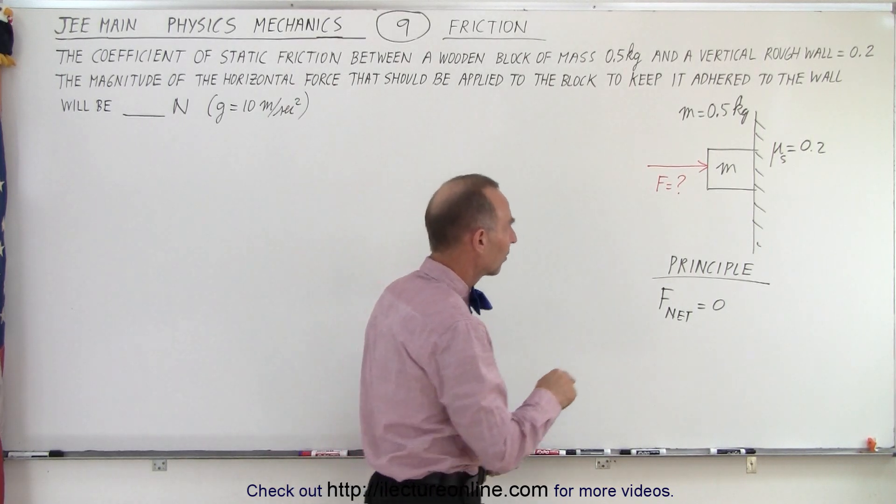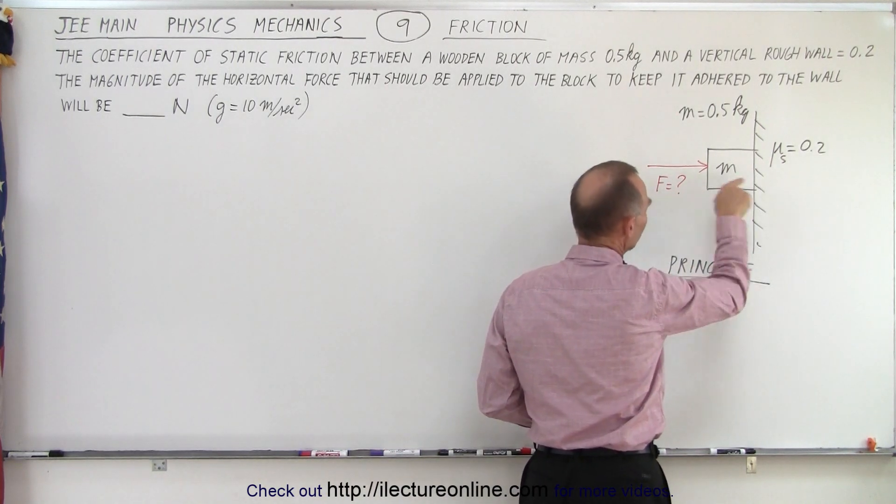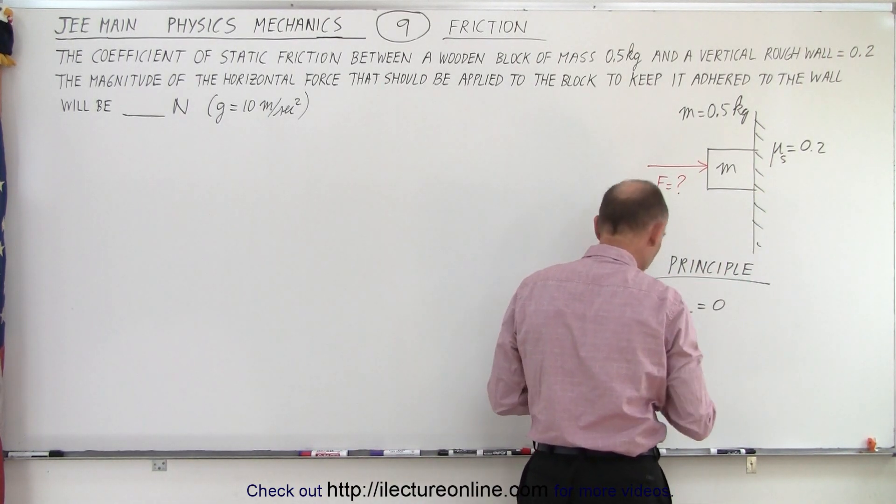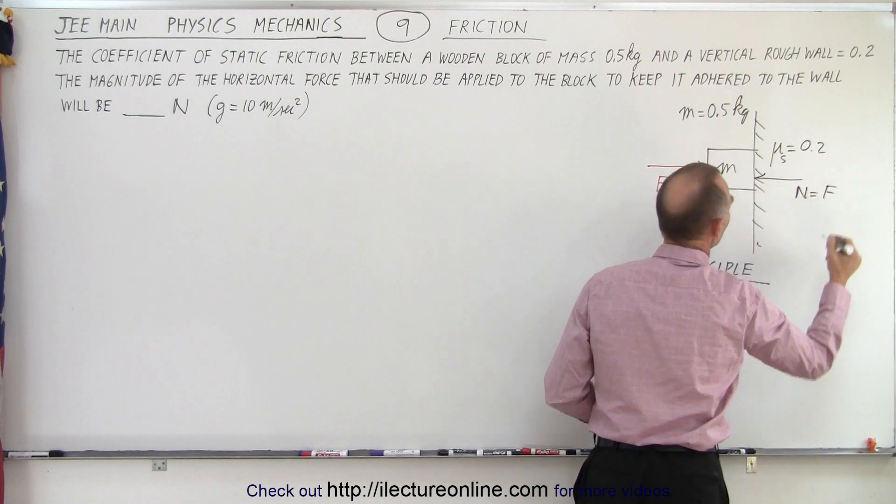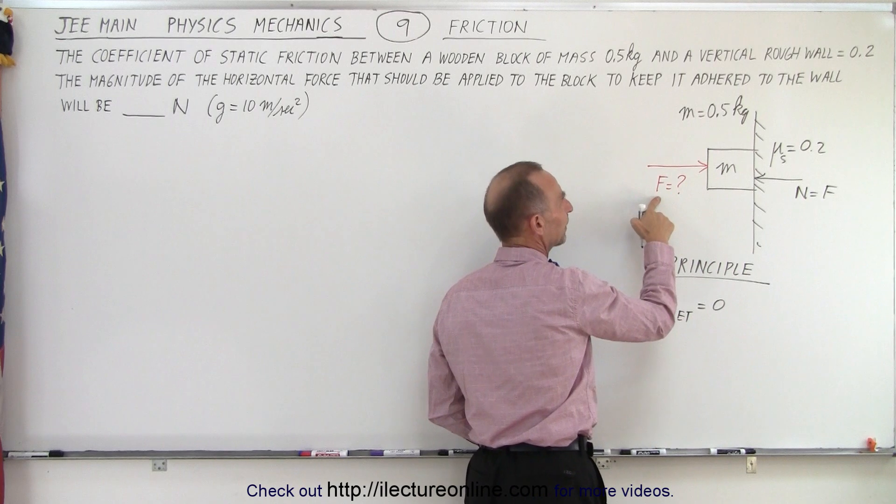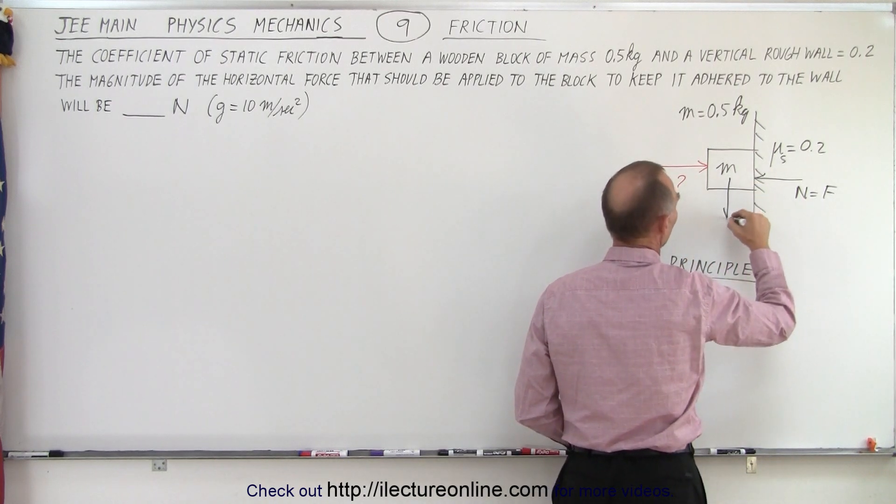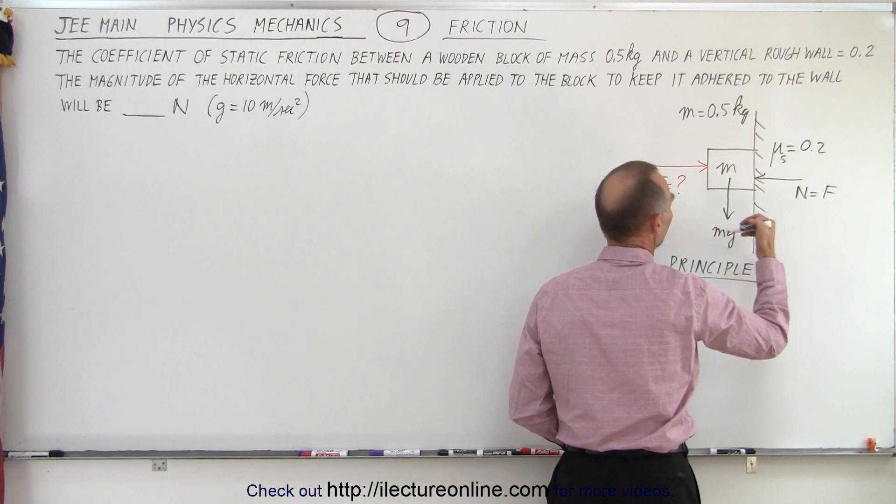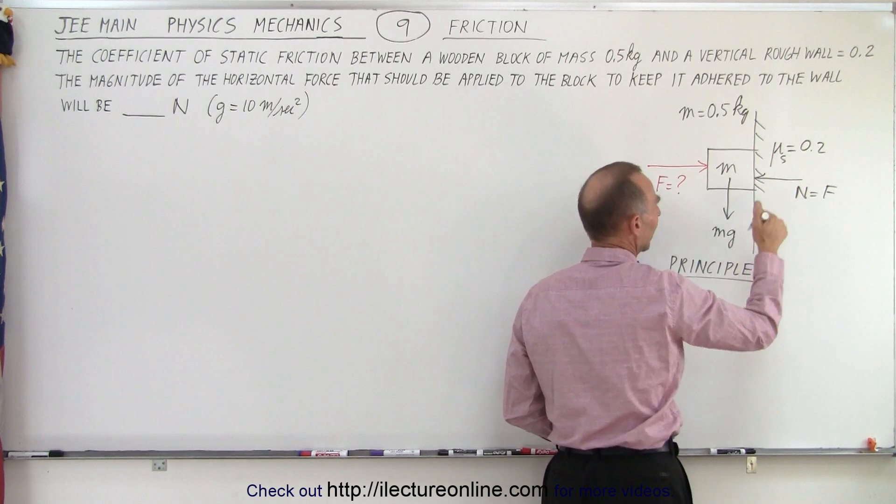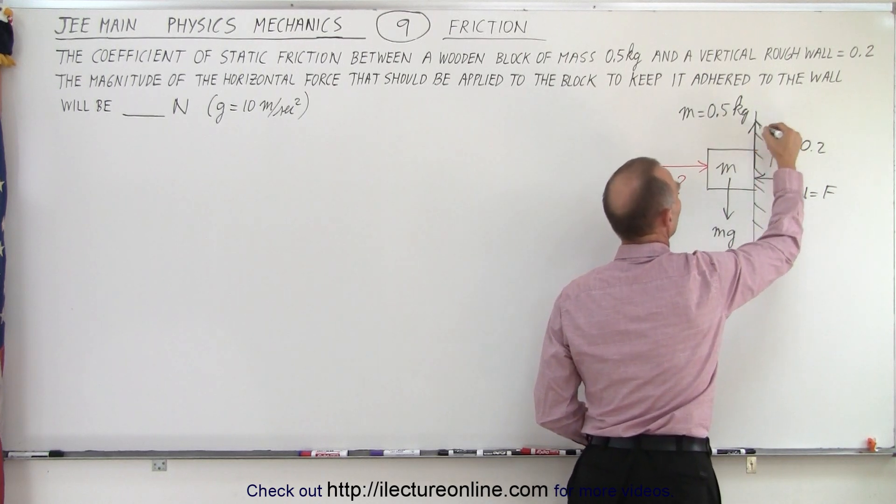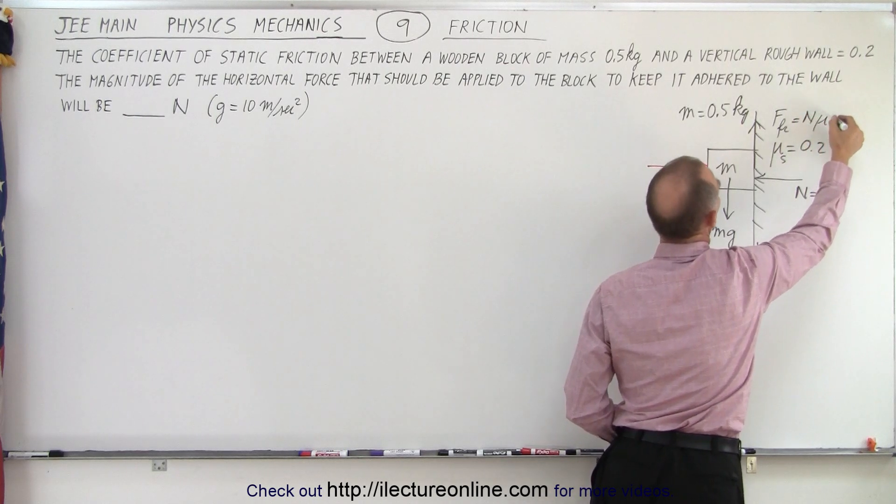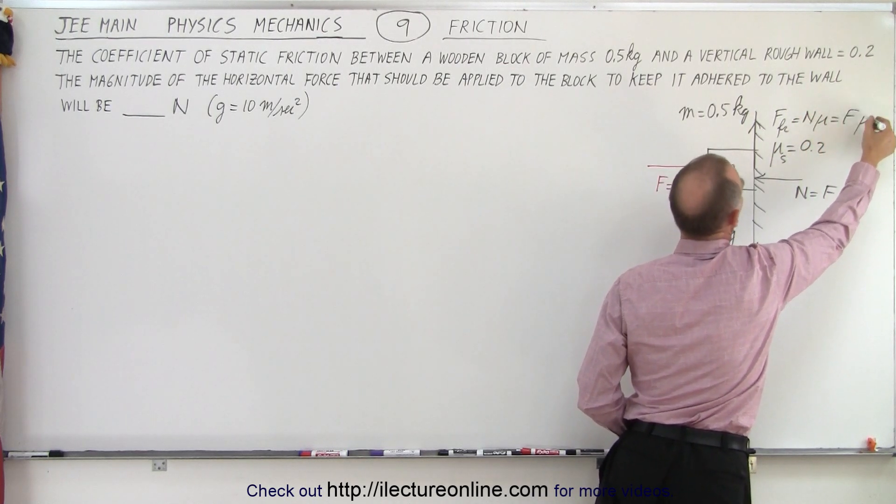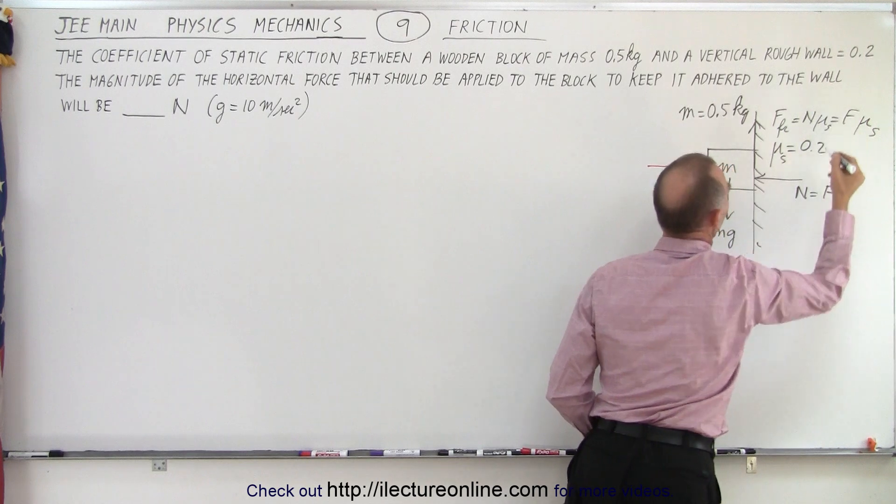So, notice that the block is being pushed into the wall, so the wall will push back with an equivalent force in the other direction, the normal force, which is going to be equal to the force applied over here. Then we have the weight of the block, which pulls it down. And of course, without friction, the block would slide down, which means the friction force is in this direction, so force friction is equal to the normal force times mu, which is equal to the force applied times mu. And of course, this is a static friction.